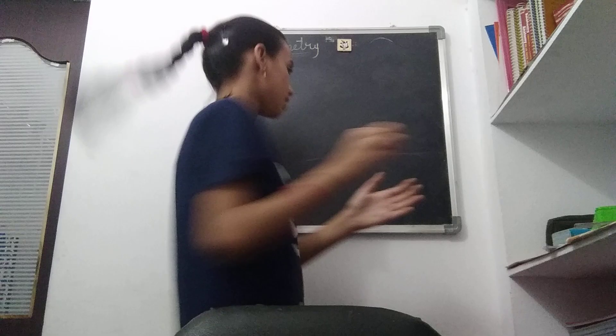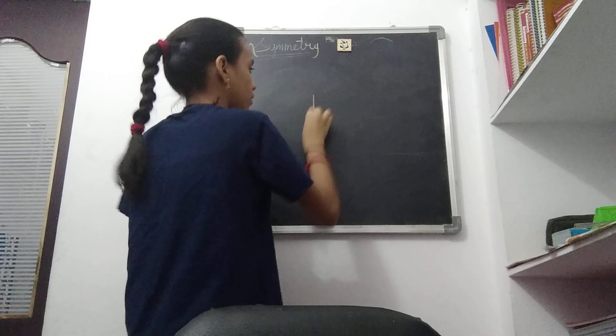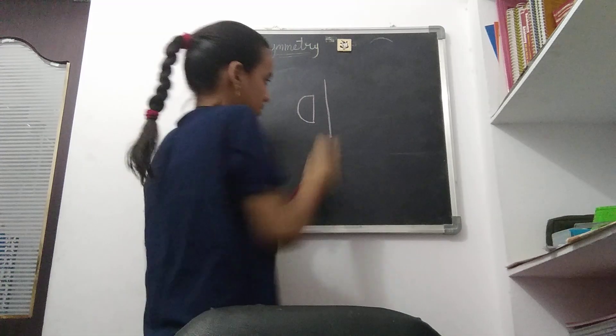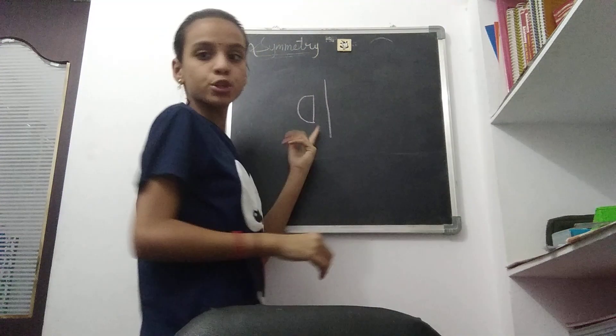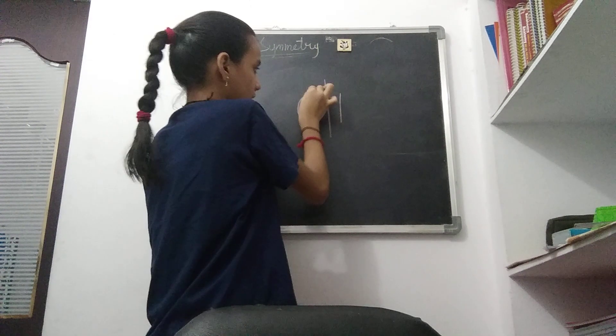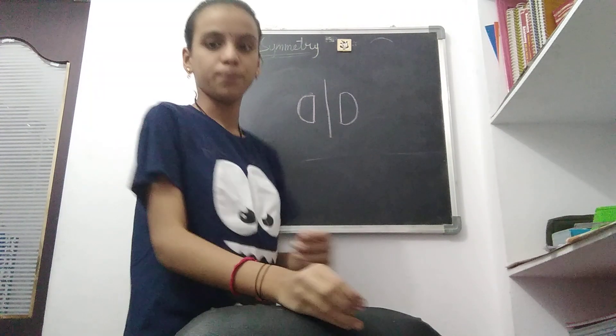Reflection symmetry is nothing but if you stand in front of a mirror — if this is a mirror, the picture just reflects. So we have to draw this reflection symmetry, and this is called reflection symmetry.